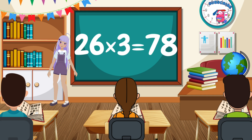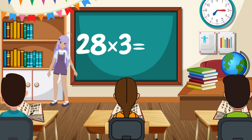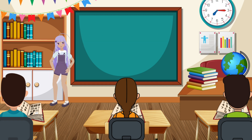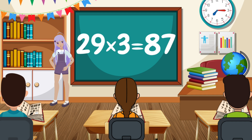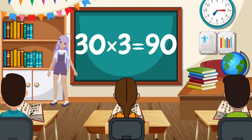27 x 3 equals 81. 28 x 3 equals 84. 29 x 3 equals 87. 30 x 3 equals 90.